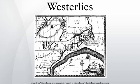The westerlies can be particularly strong, especially in the southern hemisphere, where there is less land in the middle latitudes to cause the progression of west-to-east winds to slow down. In the southern hemisphere, because of the stormy and cloudy conditions, it is usual to refer to the westerlies as the roaring forties, furious fifties, and shrieking sixties according to the varying degrees of latitude.